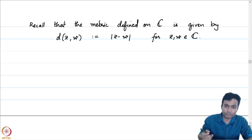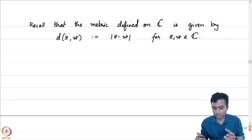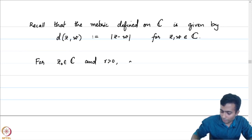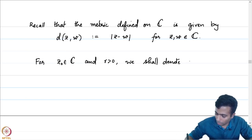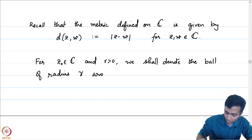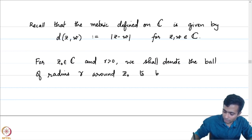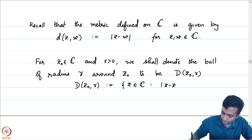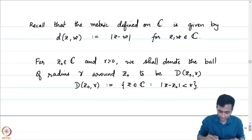The first thing is to describe balls in C with respect to this metric. We shall denote, for a point z0 in C and r positive, the ball of radius r around z0 to be D(z0, r). Recall that D(z0, r) is the set of all z in C such that the distance of z to z0 is less than r. The 'D' here is actually for disk — balls in C are also called disks.